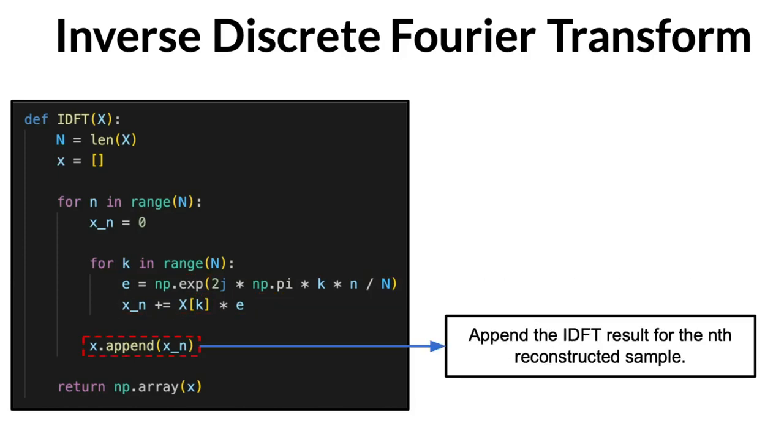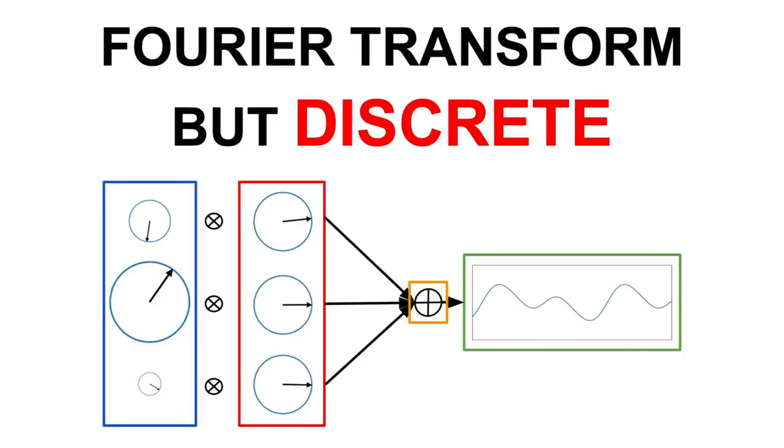Once this loop ends, we have obtained the nth sample of our input signal. And that's basically how you compute the discrete Fourier transform for a digital signal.